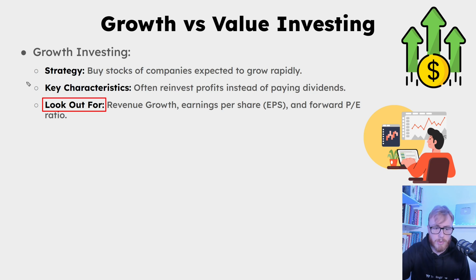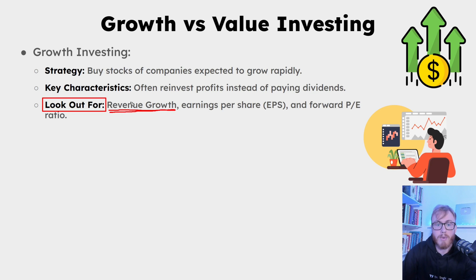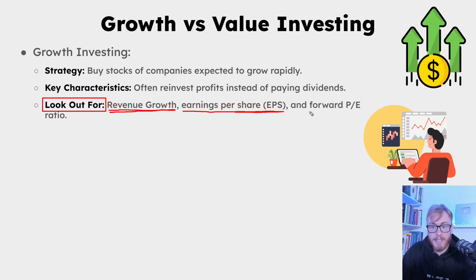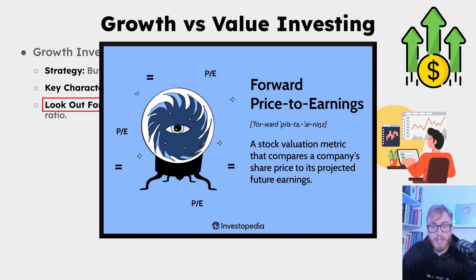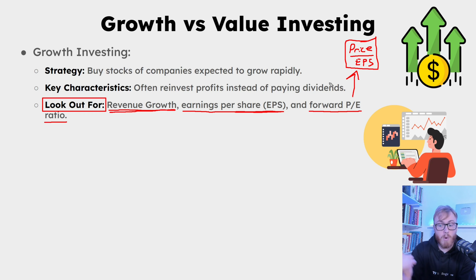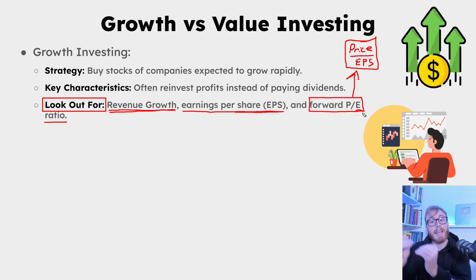When looking for growth stocks, there are tons of different metrics. Some examples include revenue growth — this is basically why it's called growth investing. Another metric is earnings per share (EPS). A key metric is the forward price-to-earnings ratio (PE ratio), which is the price of a stock divided by the earnings per share. The forward PE ratio is the PE expected in the future. The goal for growth investing is to increase your money by selling stocks at higher prices in the future.